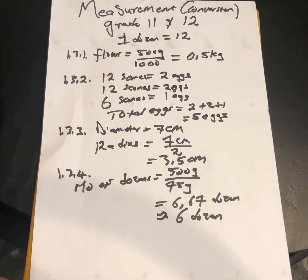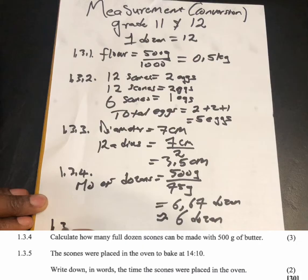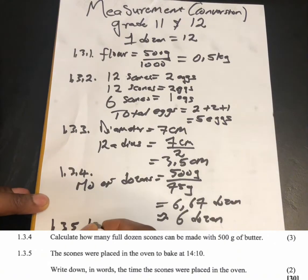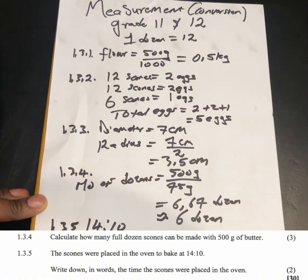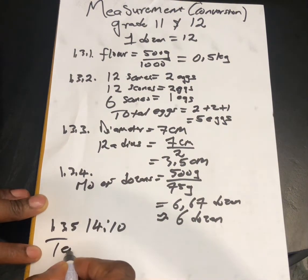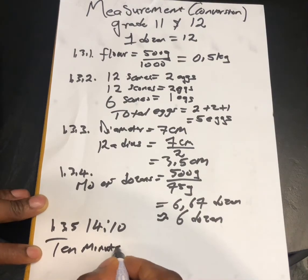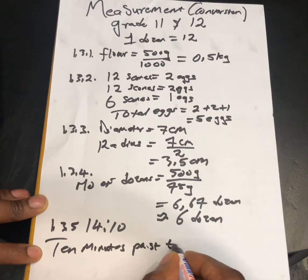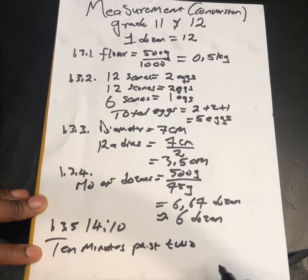Question 1.3.5: the scones were placed in the oven to bake at 1410. Write down in words the time the scones were placed in the oven. We know that 1410 is 10 minutes past two in the afternoon.